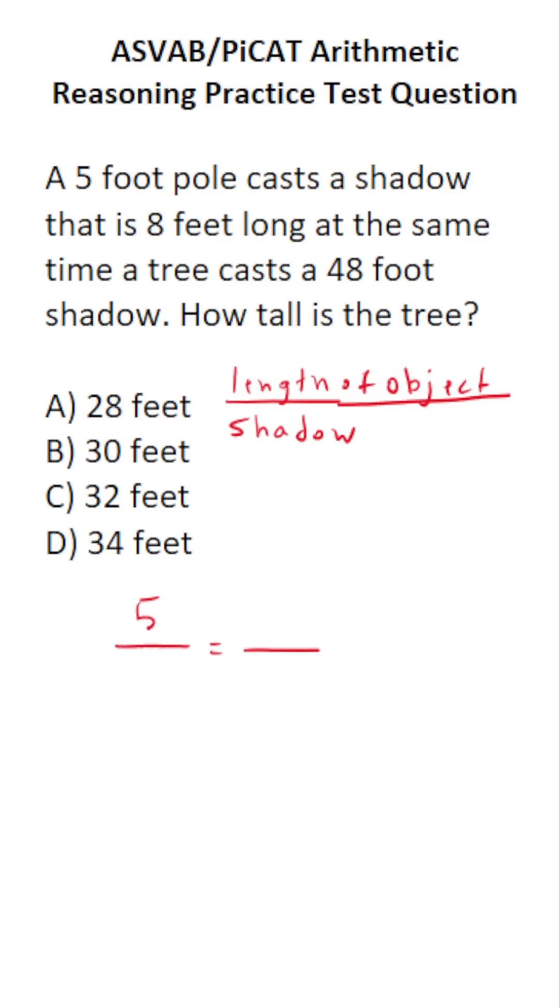We have a 5-foot long pole casting a shadow length of 8 feet. The height of the tree is unknown, so call it X. And its shadow is 48 feet.